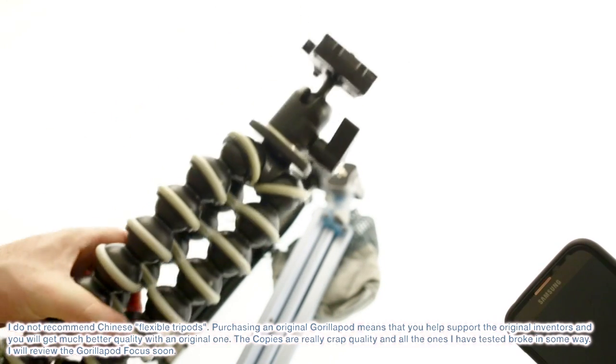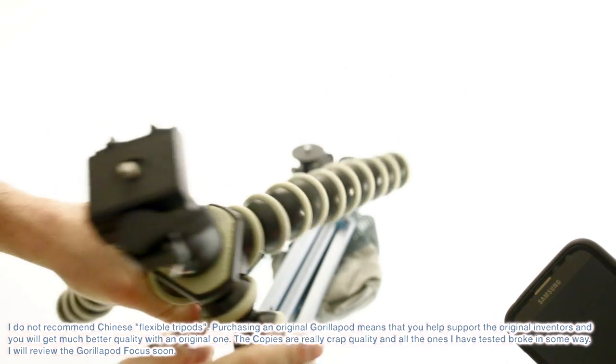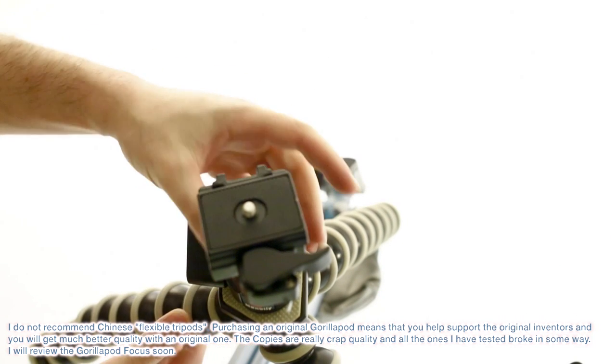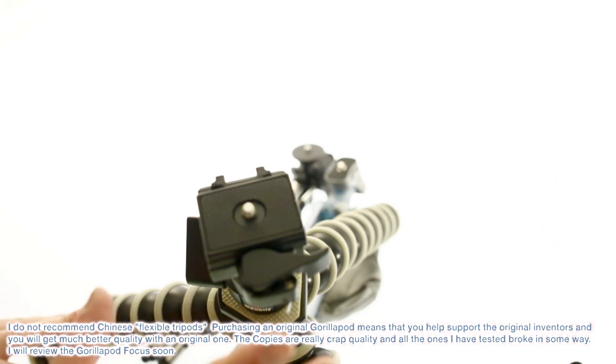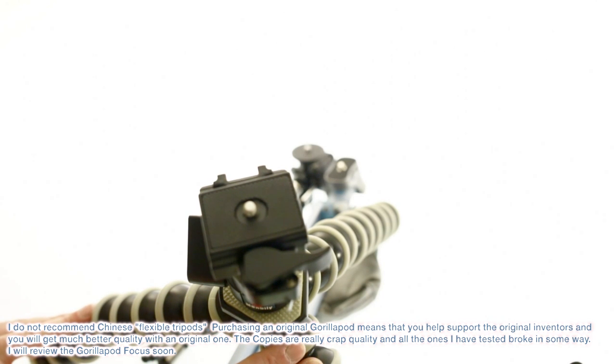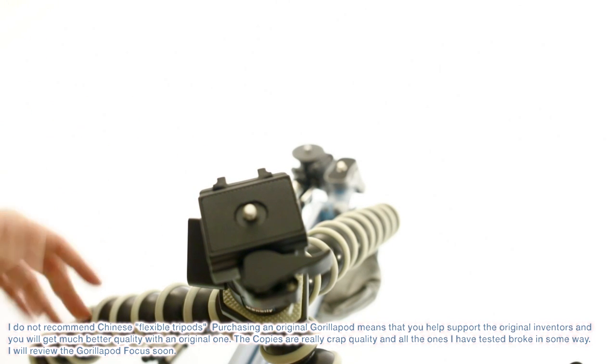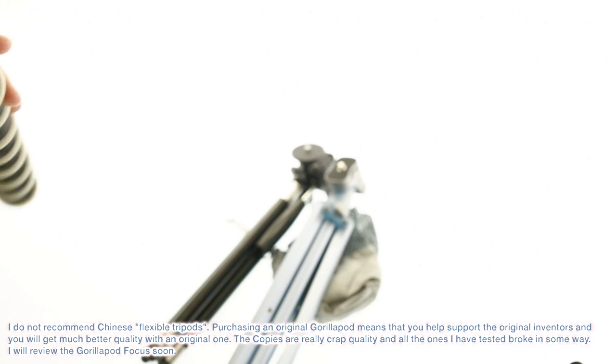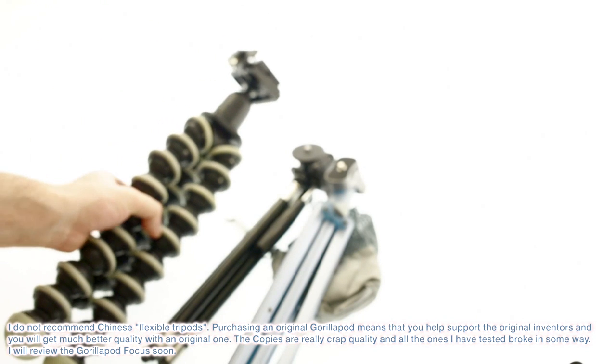And then another thing that I haven't been using that much recently, but something I got a lot of views from in the past is this Gorillapod type thing. So this is a very, very oversized one that you don't really need this sort of size for a phone. This is intended for bigger cameras. But this is the one that I have here to show you, but just as an example. And so you can get small Gorillapods from like a pound on eBay, and you can get much cheaper tripods.